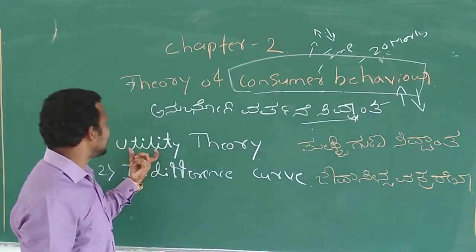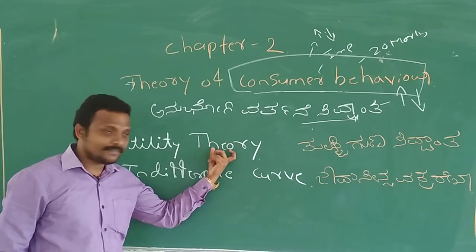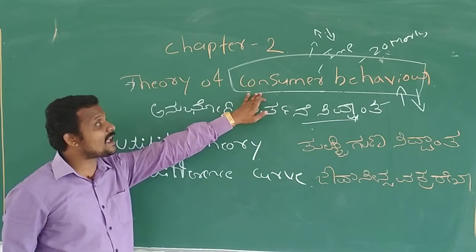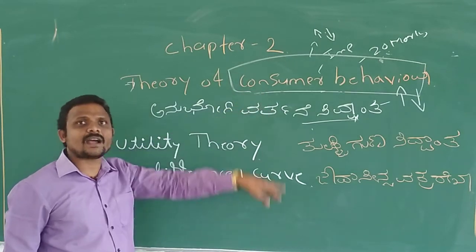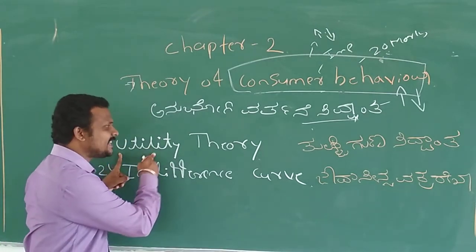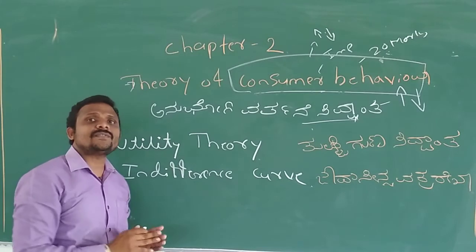The first one is utility analysis or utility theory. The second one is indifference curve. Consumer behavior can be explained with the help of two theories. The first one is utility analysis or utility theory. The second one is indifference curve.